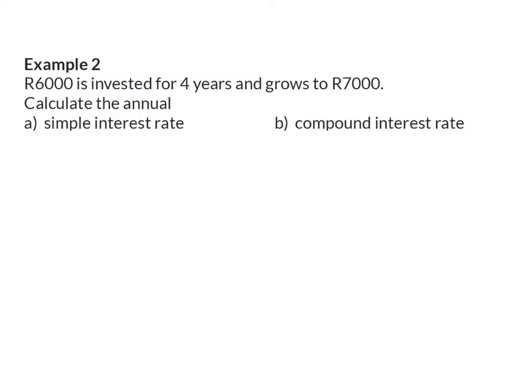Example two, 6,000 rand is invested for four years and grows to 7,000. Calculate the annual simple interest rate for A and the annual compound interest rate for B. So, here an amount of 6,000 rand was invested, so that is our starting value, our P-value. And this amount is invested for four years, which will then be our number of periods. This amount grows to 7,000 rand, which will then be our final amount. And we are asked to determine the interest rate.